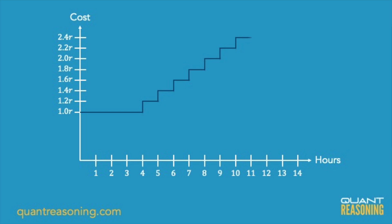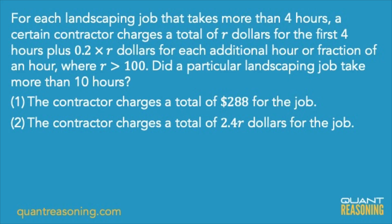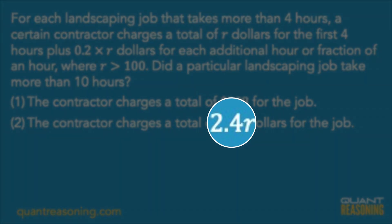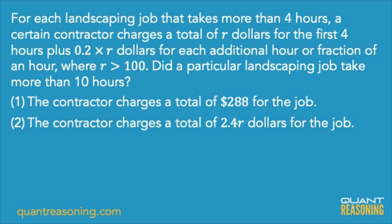Using the graph, instead of asking did it take more than ten hours, we can ask: did it cost more than 2.2R? Because that's where we'd be at ten hours. If it's more than ten hours, it's going to cost at least 2.4R. If it's up to ten hours, it'll cost 2.2R or less. So really, this question is asking: was it more than 2.2R for the job? Statement two gives us a definitive answer — it says yes, it was more than 2.2R; in fact, it was 2.4R. Statement two is definitely sufficient on its own and gives us a definitive yes.